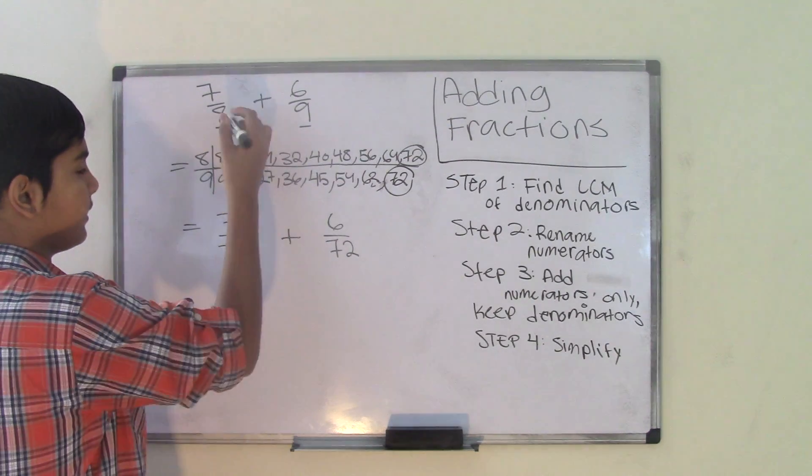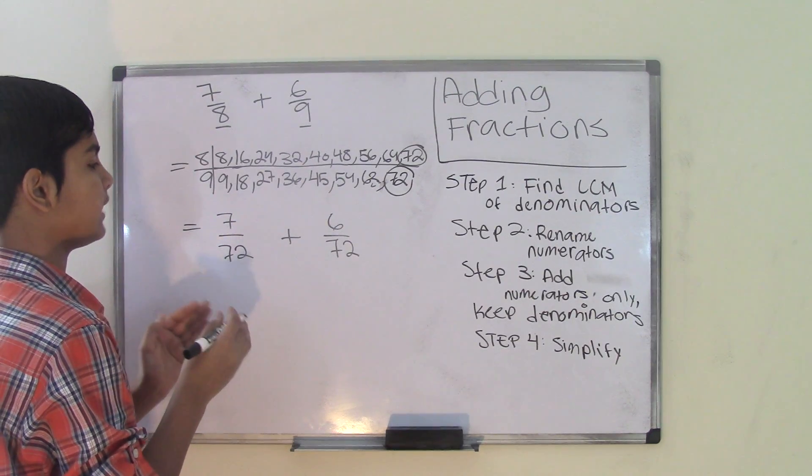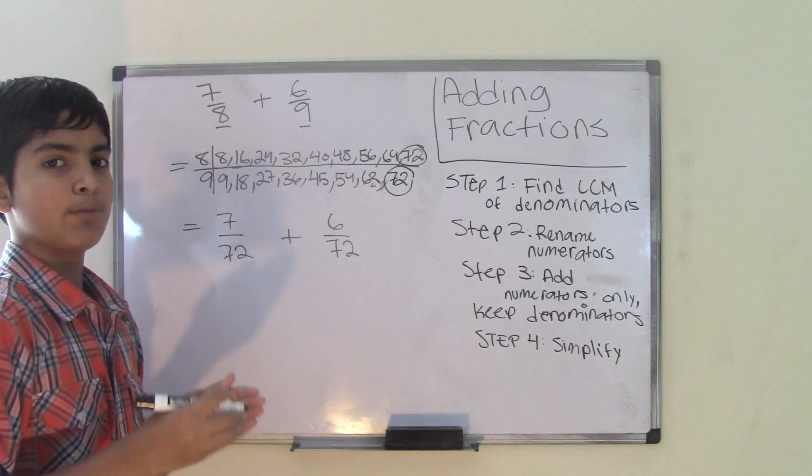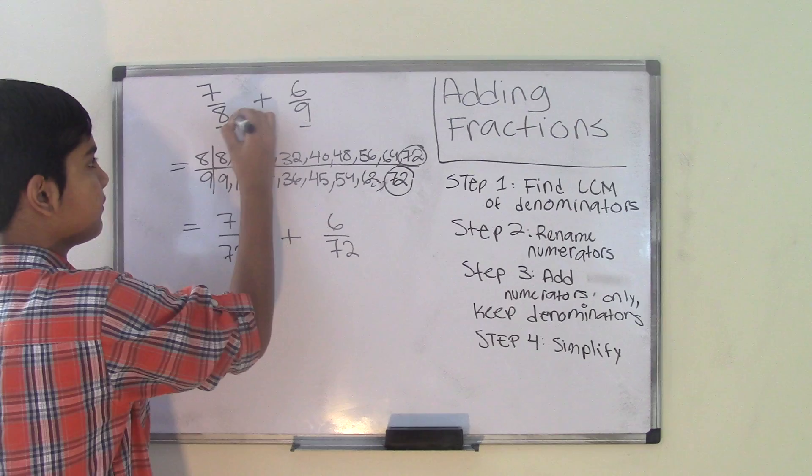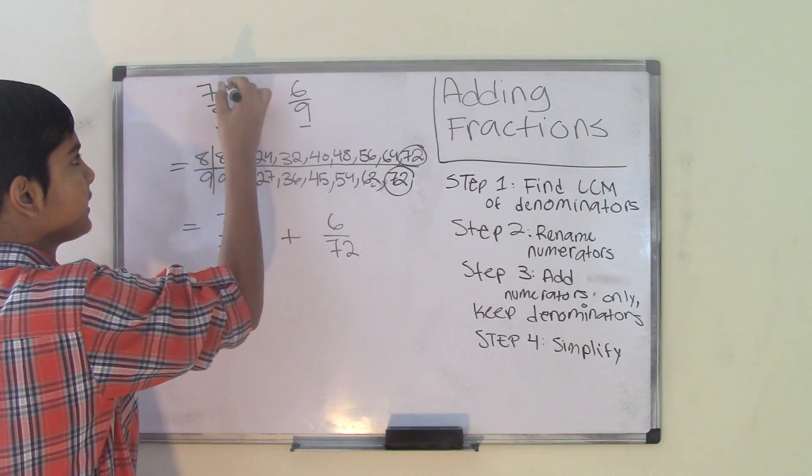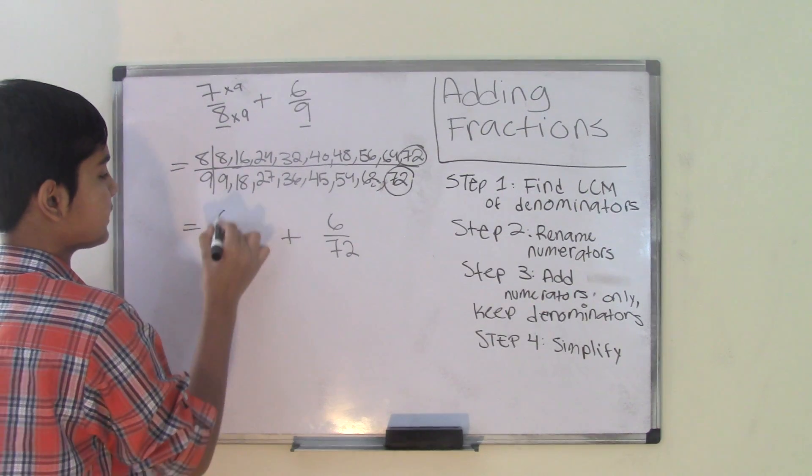What I mean by that is we have to multiply the numerators by the same number that we multiplied the denominators with to get the LCM. If I multiply 8 with 9 to get the number 72, then I have to multiply the 7 with 9 as well. We know that 7 times 9 gives us 63.